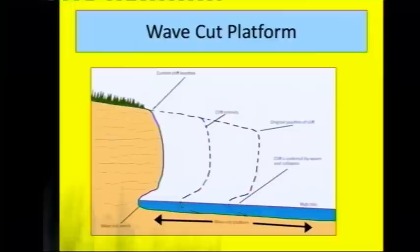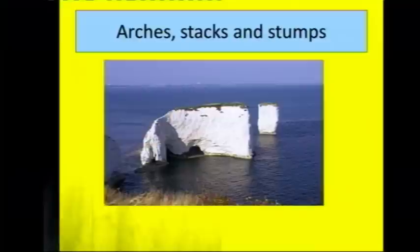This is the potential diagram you could draw in your exam. You can see you've got the wave cut notch at the base of the cliff. The land on top of it isn't supported so it collapses into the sea forming the wave cut platform. Again, when you've got hydraulic action and abrasion hitting the base of the cliff at high tide, it's going to create a wave cut notch. This is known as cliff retreat and it forms a wave cut platform.